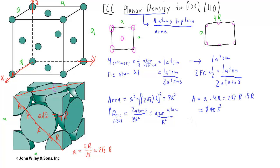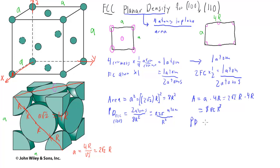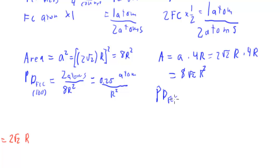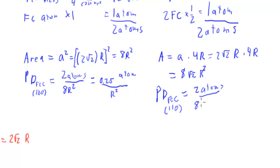The planar density of FCC on the 110 plane equals 2 atoms divided by 8√2·r², which works out to approximately 0.177 atoms per r squared.